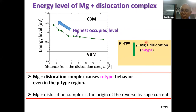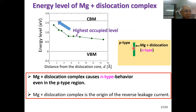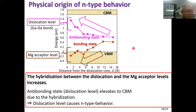This is a P-type region because this is magnesium-doped gallium nitride. However, there is a dislocation, and this dislocation attracts magnesium. The magnesium–dislocation complex is formed, and this region becomes N-type. Therefore, the magnesium–dislocation complex causes a reverse leakage current. Why does the magnesium–dislocation complex behave as N-type?